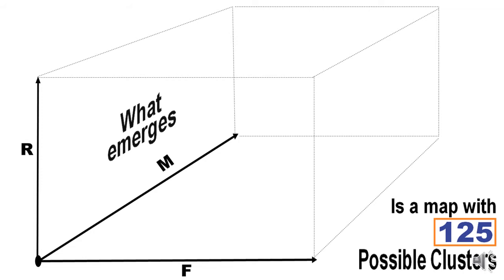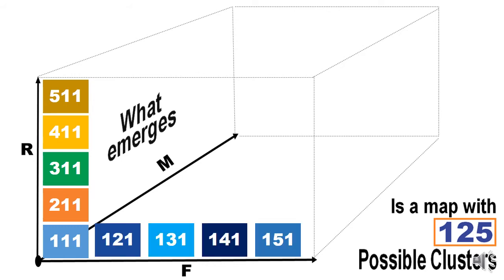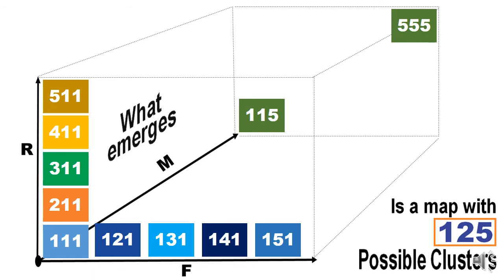What emerges after this RFM analysis is a map with 125 possible clusters. Take the case where F is the lowest and M is the lowest — changing only the R value gives clusters 111, 211, 311, and so on. Similarly, holding R and M at minimum and changing only F gives 111, 121, and so on, up to 115. At the top corner, you get the best possible cluster of 555 — the highest possible score for recency, frequency, and monetary.